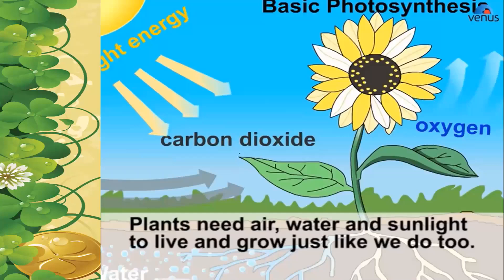We'll see the process of photosynthesis. Just like plants need air to breathe and respirate, they also need water to grow and sunlight to make their food and to live and grow. Once they get water, nutrients from the soil, and sunlight from outside, the food is prepared in the leaves. They have very small pores in the leaves known as stomata, through which they intake carbon dioxide, prepare the food, and then through the stem it is transported to the other parts of the plant.